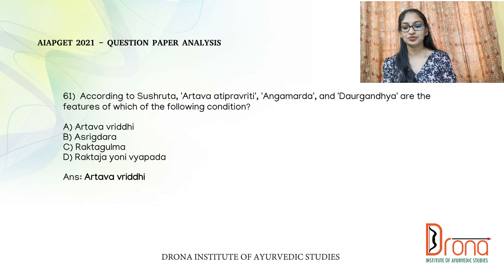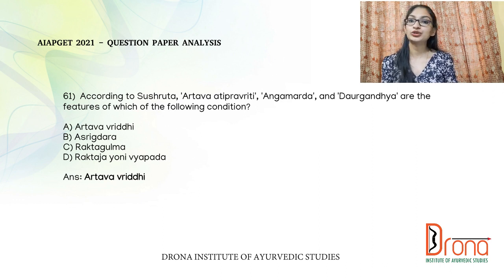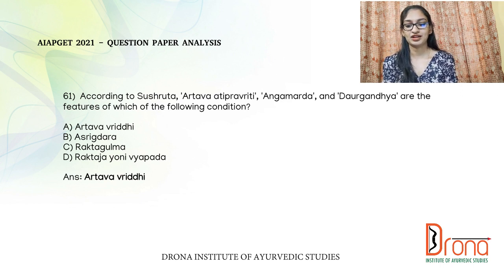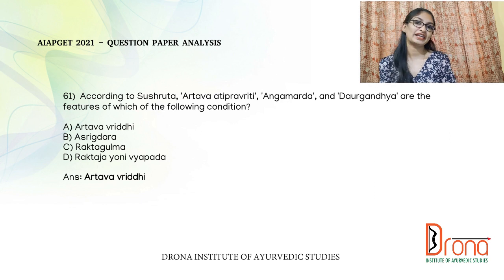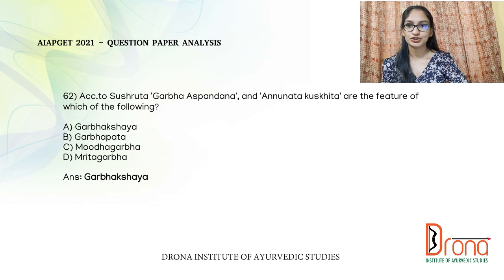The next question: according to Sushruta, artava atipravarti, angamardham, and daurgandhyam are the features of which condition? Looking into Sushruta Sutra Sthanam 15th chapter, Dosha Dhatu Malak Shaya Vriddi Viknyaniyam, under Upadhatu Vriddi, it is told that in Artava Vriddi the symptoms are 'artava atipravarti, angamardho daurgandhyam cha.' In Asrik Dhara it is 'angamardha sa vedana,' and in Dektagulmam it is 'masi masi tada artavam uparudhya manam kukshim.' So these features belong to Artava Vriddi.